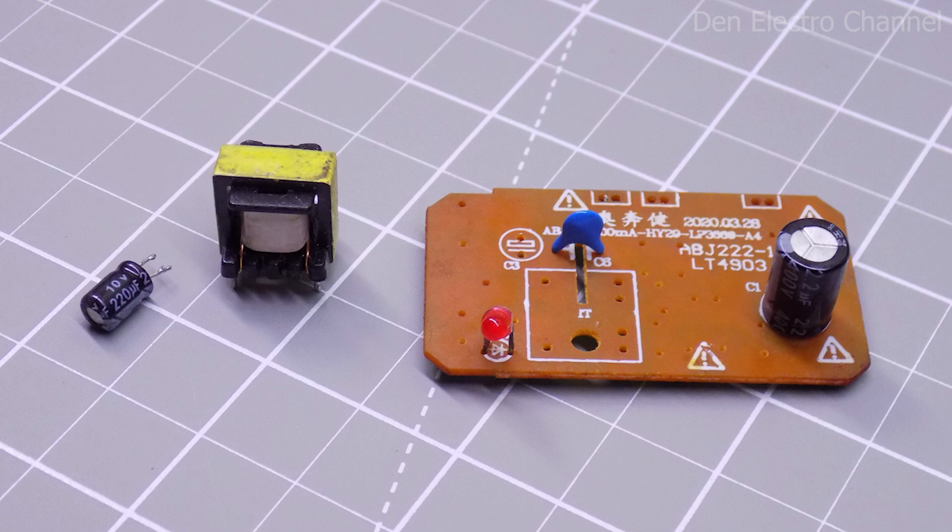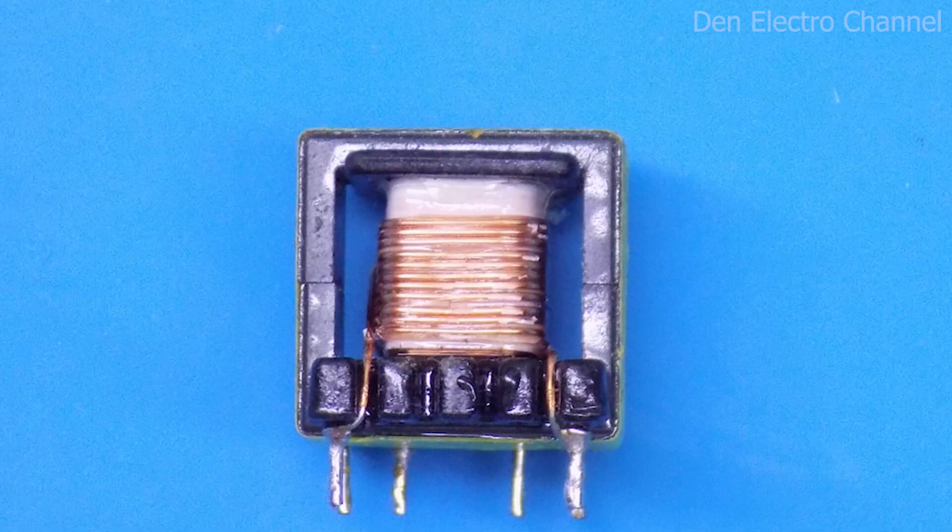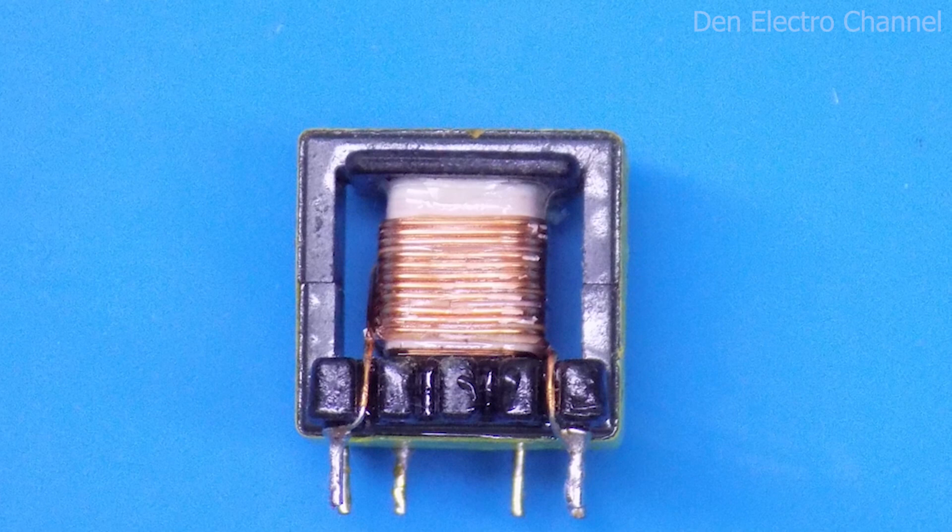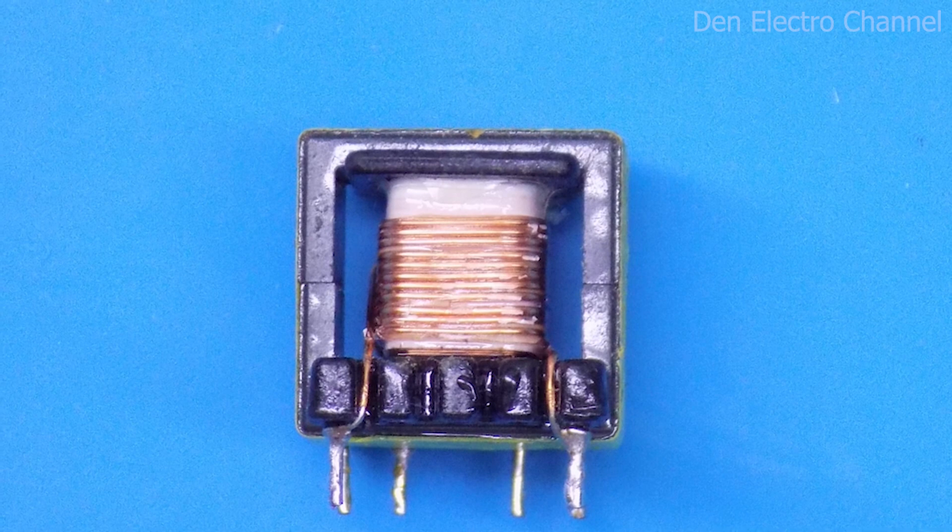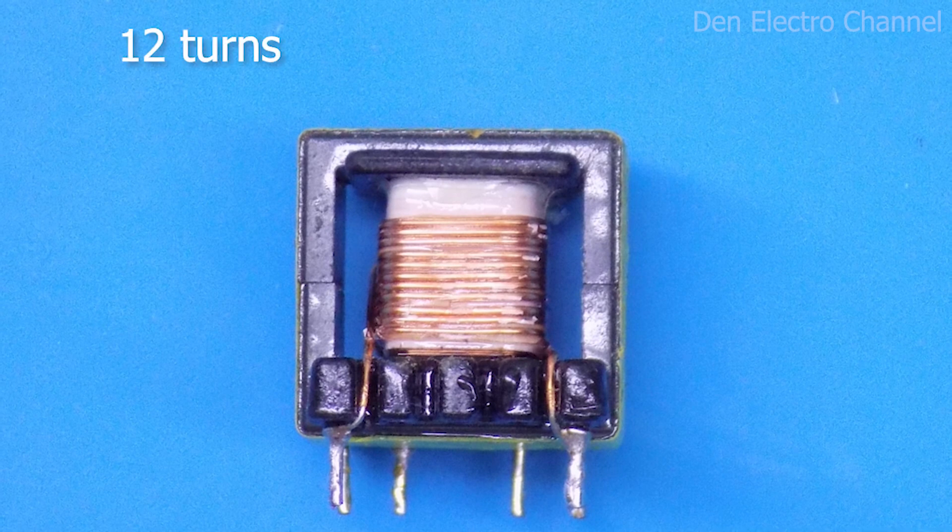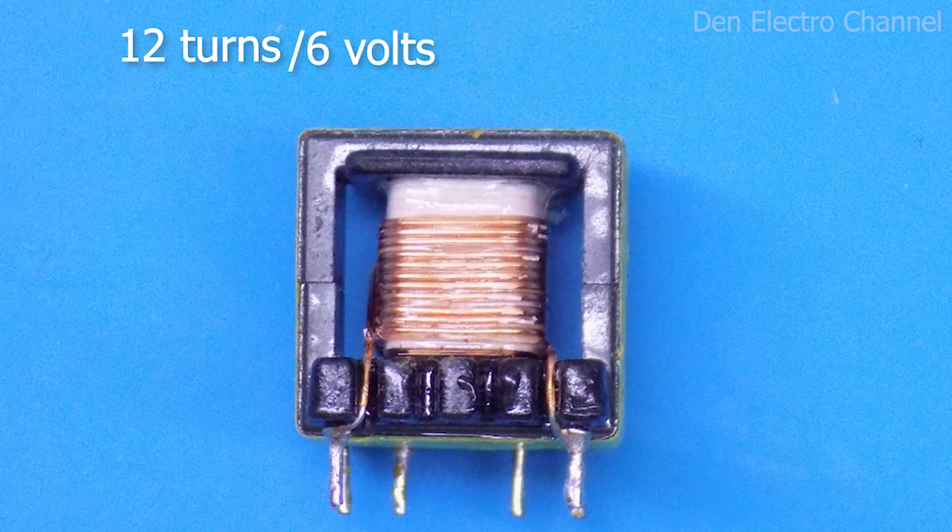Then I desolder the transformer and capacitor. When I removed the insulation, it turned out that there was a secondary winding immediately below it. This is very good, because I can find out how many turns there are and finish the amount I need. There are 12 turns here. I divide this figure by 6 volts and it turns out that there are 2 turns per 1 volt.